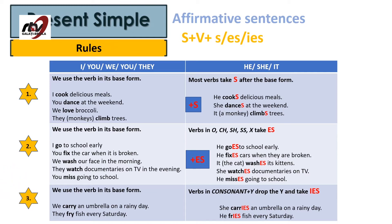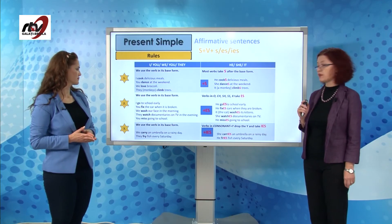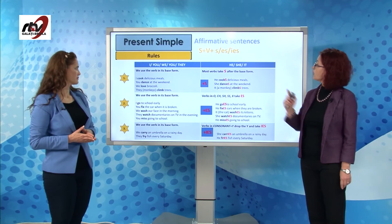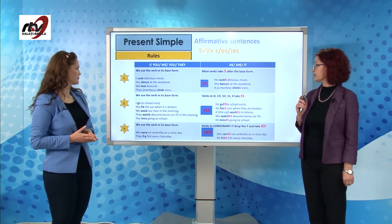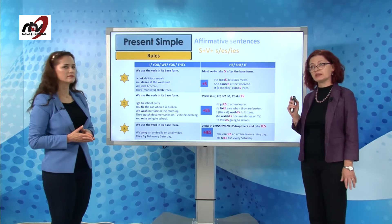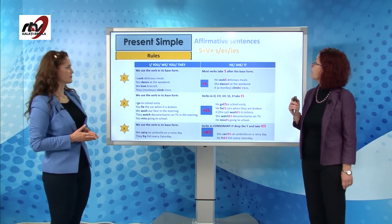The third rule applies to verbs ending in consonant plus Y, which drop the Y and turn into IES. She carries an umbrella on a rainy day, he fries fish every Saturday. Remember, we only add an ending to verbs for the subject he, she or it, or a noun which replaces them.